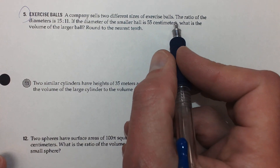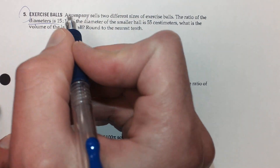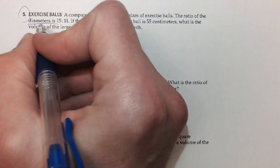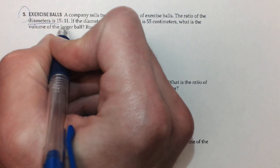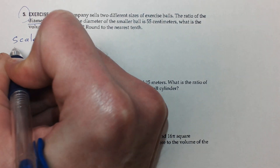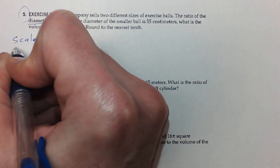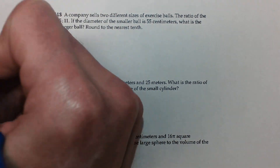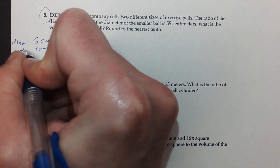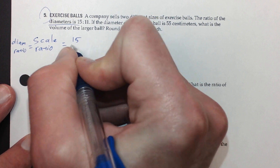Two different exercise balls — the ratio of the diameters is really what makes this worthy of a hint. It's 15 to 11. When you think of diameters, they're two different dimensions of the ball, so when you're comparing dimensions, it's already in a ratio. The ratio of the diameters is exactly the same thing as the scale ratio. So the diameter ratio is the scale ratio, and that is equal to 15 over 11.